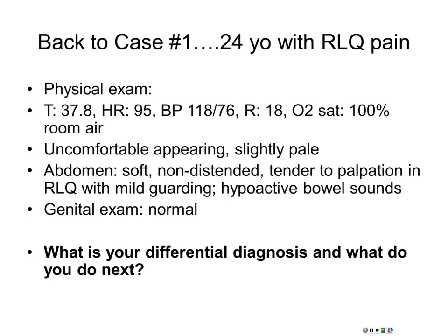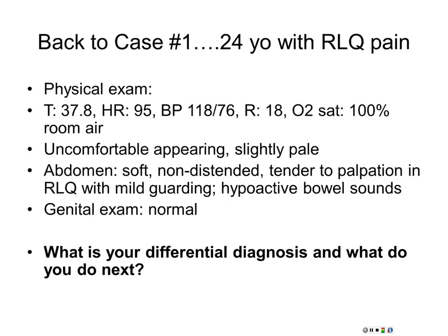Classic presentation of appendicitis: periumbilical pain, anorexia, nausea, vomiting. Pain starts to generalize then moves to the right lower quadrant. That whole process only occurs in about half to two-thirds of patients. About one-third of appendices are retrocecal, so those patients will actually have flank pain. If a patient shows up with flank pain, they may actually have a retrocecal appendix.